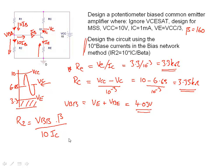So we can do 10 IC over beta, so we'll put beta up on top. Really simple. Put some numbers in: 4.03 times 160, all divided by 10 milliamps, 10 times 10 to the minus 3, and that gives me a value for R2 of 64K.